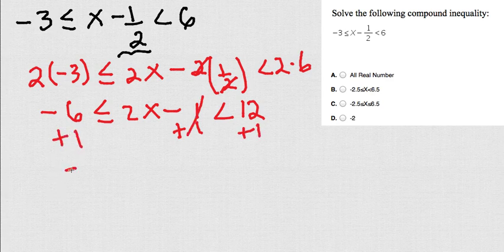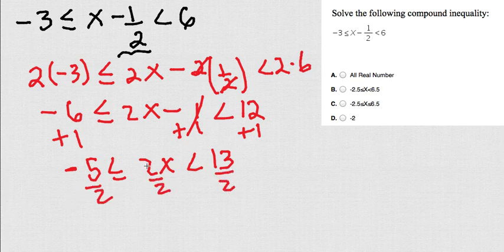Awesome. Negative 6 plus 1 is negative 5, less or equals than 2x, less than 13. Finally, I just have a 2x, so I'm going to divide every side by 2.